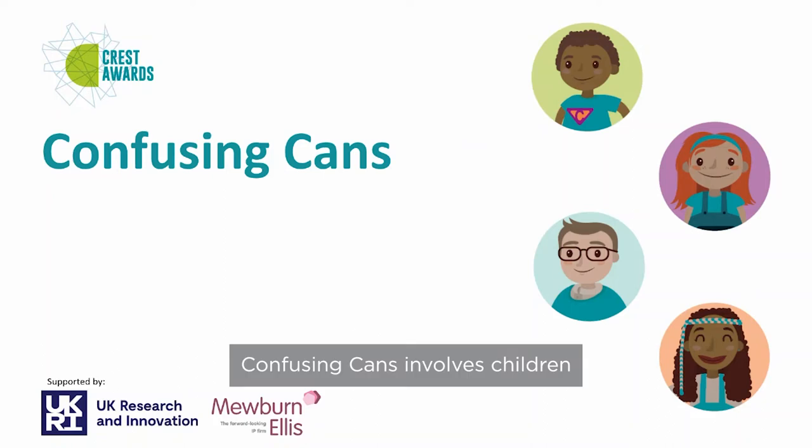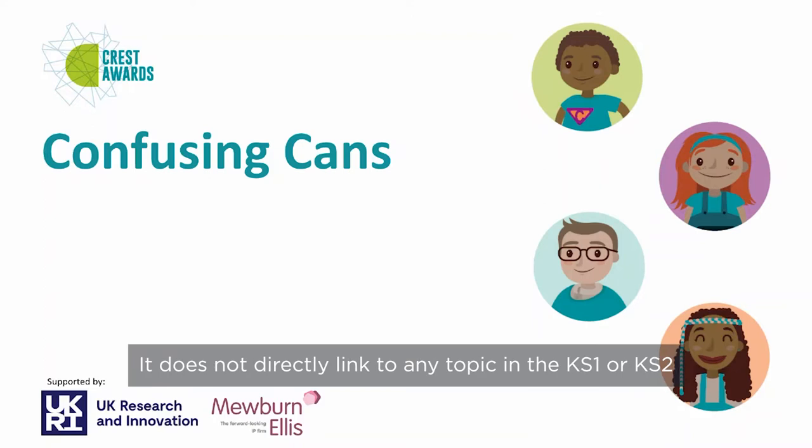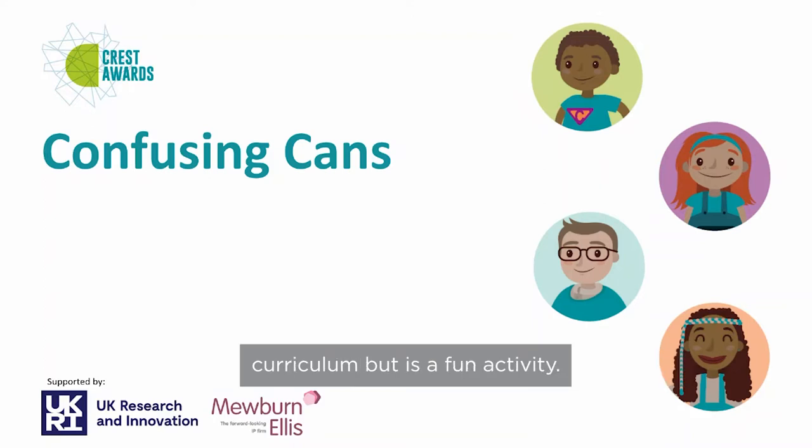Confusing Cans involves children exploring how the contents of tin cans of identical size and weight affects how they roll. It does not directly link to any topic in the Key Stage 1 or Key Stage 2 curriculum, but it is a fun activity.